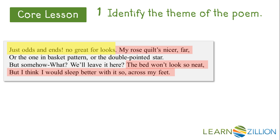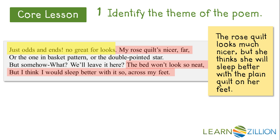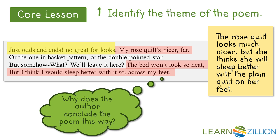This quilt is like a security blanket to the speaker. The rose quilt looks much nicer, but the grandmother thinks she will sleep better with the plain quilt on her feet. Why will she sleep better? From a careful, close reading of the poem, we have learned that family really matters to the speaker. Sentimental heirlooms have much more value to her than flashy new things. This idea is repeated throughout the poem. Therefore, the theme of the poem is the love of family and the memories that go with it.